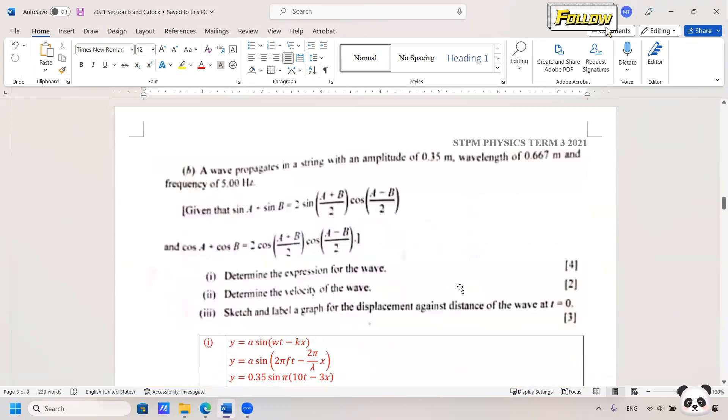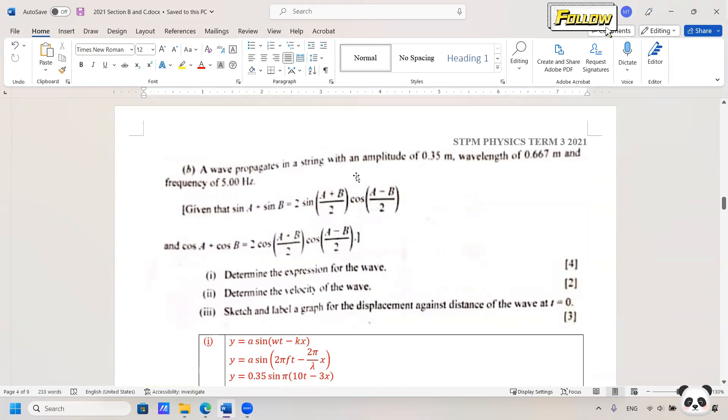We move on to the next question. The wave propagates in a string with an amplitude of 0.35 meter, wavelength 0.667 meter, and frequency of 5 hertz. Given this formula, determine the expression for the wave.